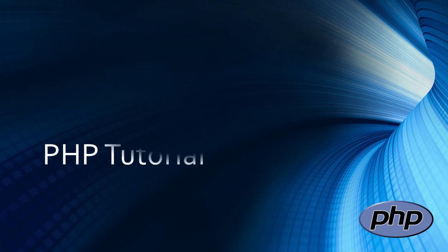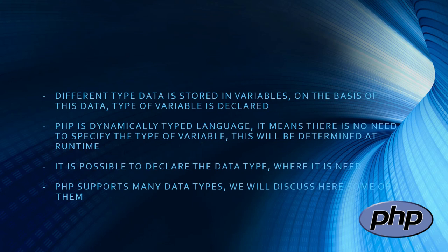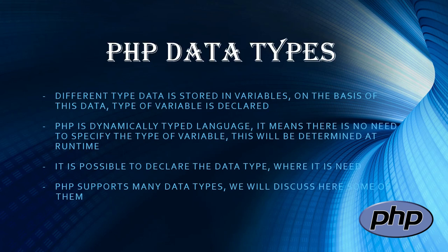PHP Data Types: different type data is stored in variables, and on the basis of this data, the type of variable is declared. PHP is a dynamically typed language, which means there is no need to specify the type of variable. This will be determined at runtime, though it is possible to declare the data type where it is needed.